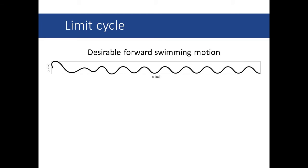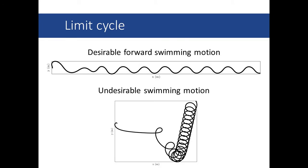We are studying a limit cycle, which is just an attracting set which trajectories converge to and are periodic. When we have a limit cycle, we actually have our desirable, straightforward swimming motion. But when we're not, we just get an undesirable swimming motion.